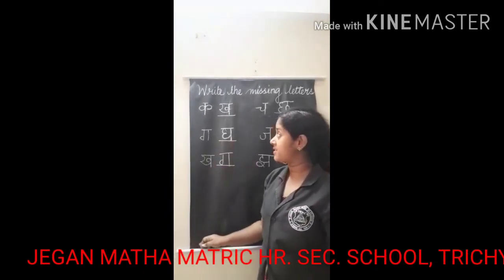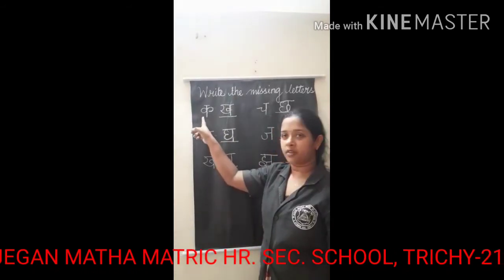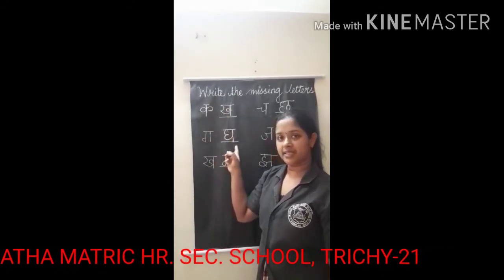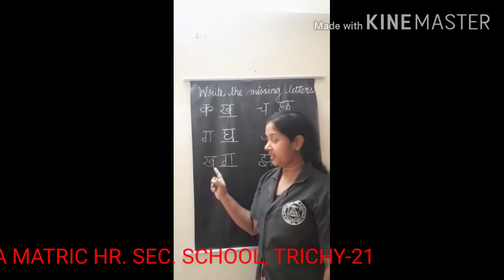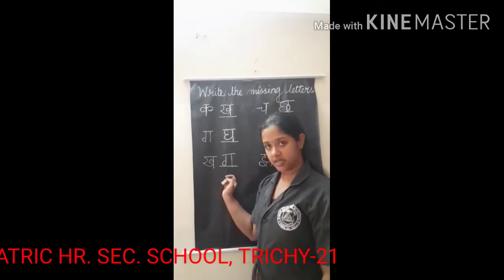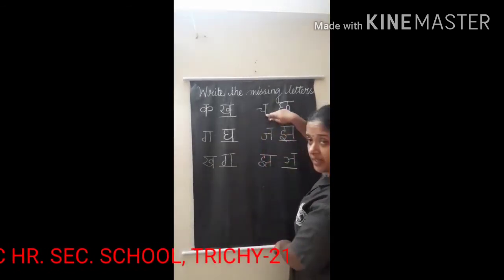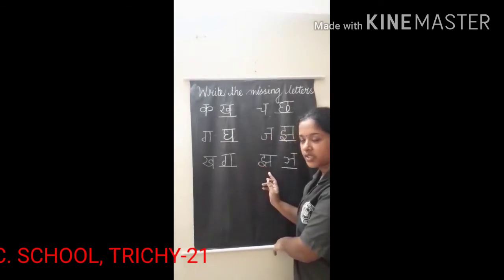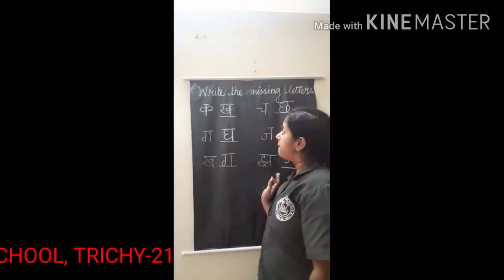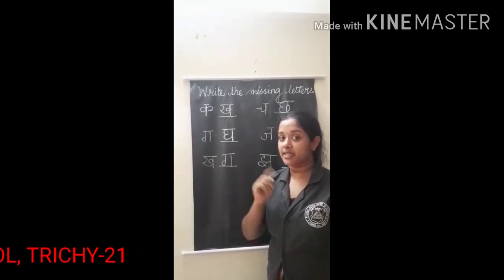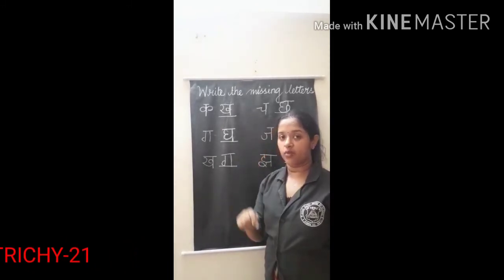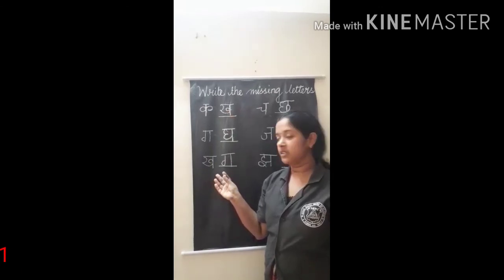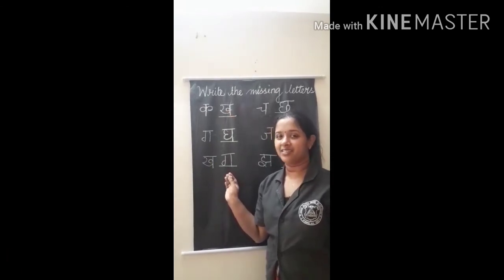Let us revise. Starting from KA — after Vyanjan KA, next is KHA. Then Vyanjan GA, next is GHA. Then Vyanjan KA, next is GA. Similarly, Vyanjan JA follows in sequence. This is the way you write the missing letters for the Vyanjans. We had first learned about missing letters of the Swar — vowels from A to AHA — and this one is totally based on the Vyanjans, the consonants. Thank you, children. Thank you for listening.